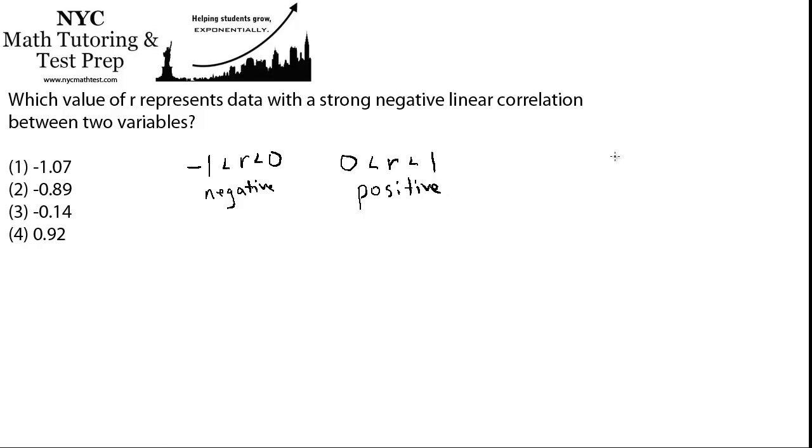And if R is less than negative one, or if R is greater than one, we'll say this is a non-linear correlation. And it doesn't mean we can't use a regression model, it just means we wouldn't use a linear regression model. It means they're correlated in some other way. Maybe it looks like a parabola, maybe it's exponential.